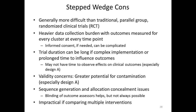Regarding internal validity, there's a greater potential for contamination, especially in Design A. There are also challenges regarding sequence generation and allocation concealment. You can sometimes do blinding of outcome assessors but that's not always possible. Finally, it can be an impractical design if you're comparing multiple interventions — for instance, having a control group, a minimal intervention group, and a more intensive intervention doesn't work well. It works better if you have just two different interventions being compared, or intervention versus usual care or control.